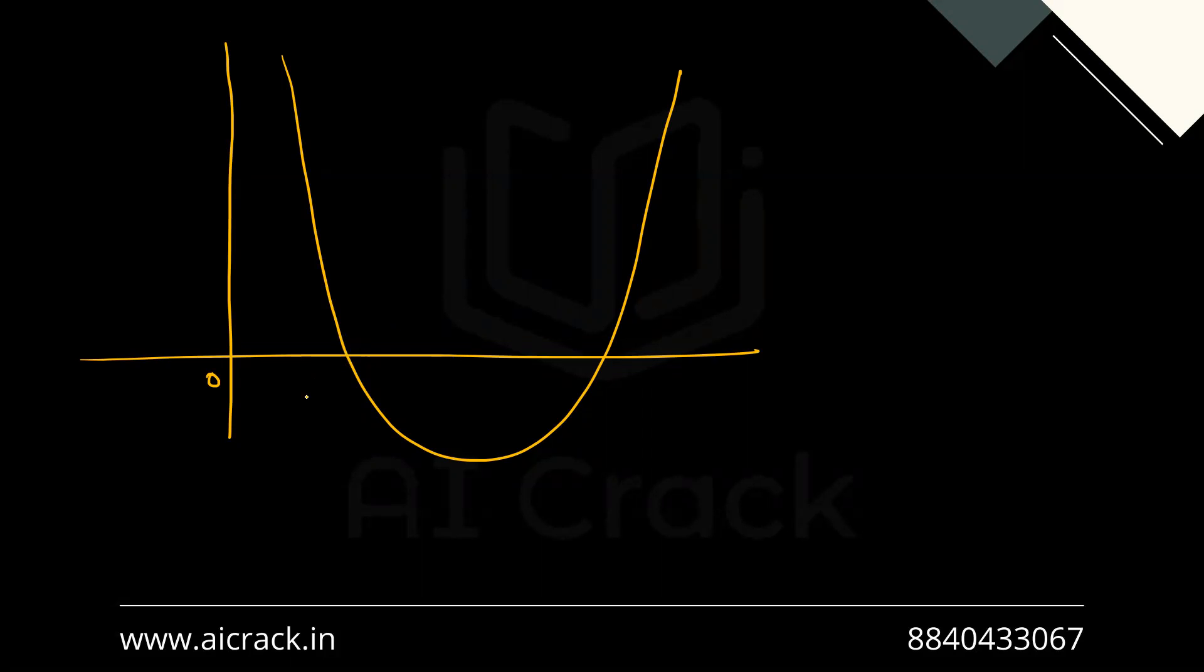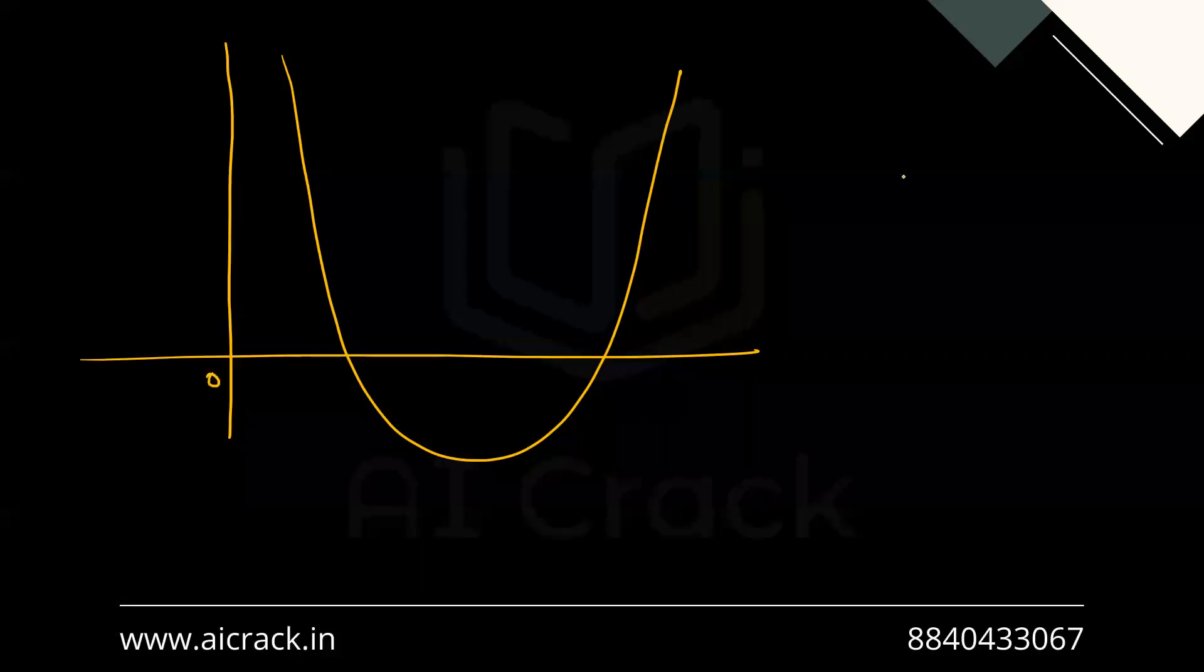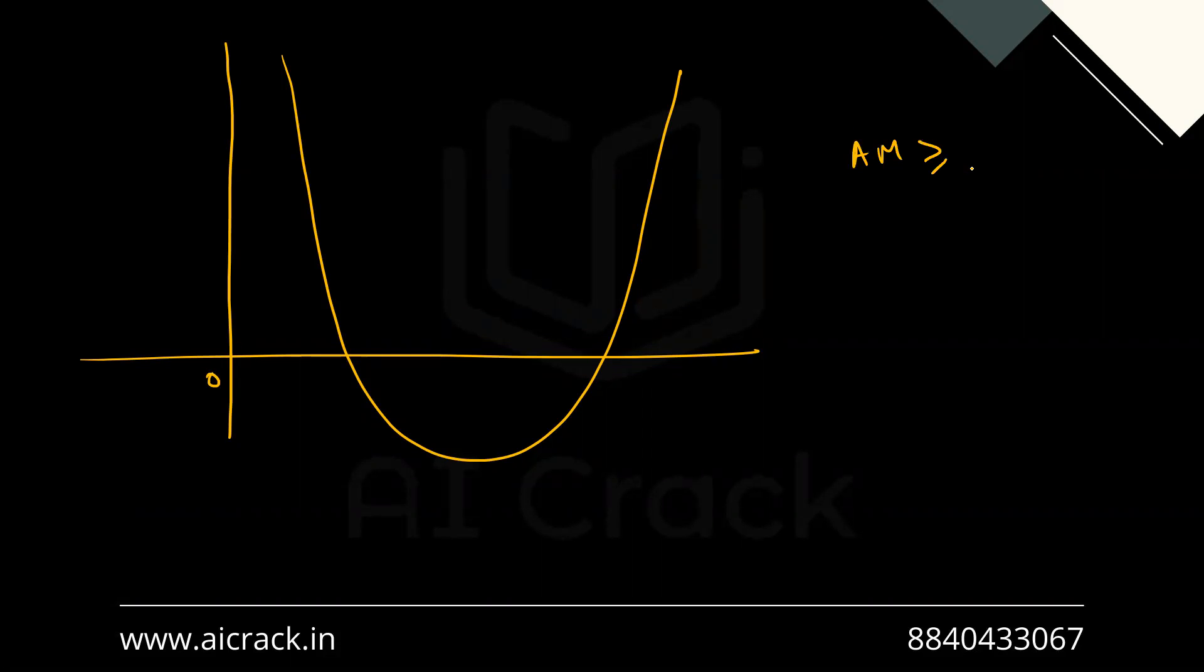Now we also know that AM is greater than or equal to GM is greater than or equal to HM, but the equality holds only when both numbers are equal. But in this case we have both numbers as distinct because roots are distinct, so we have AM greater than GM greater than HM.